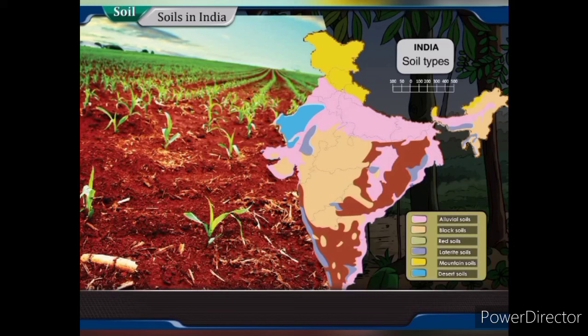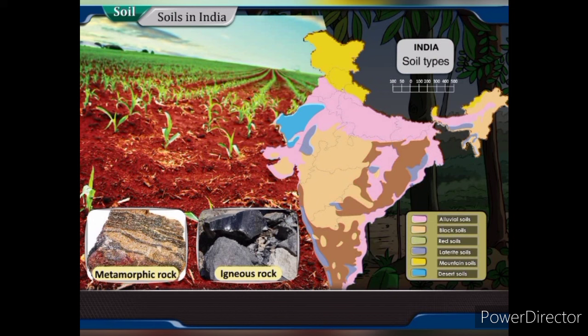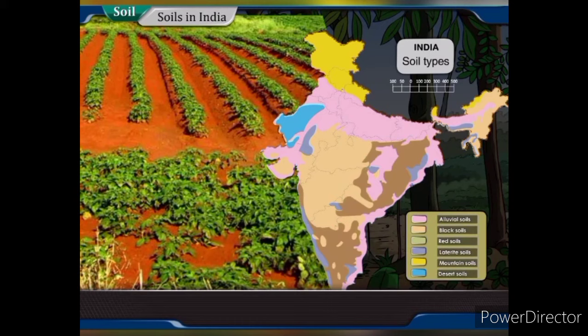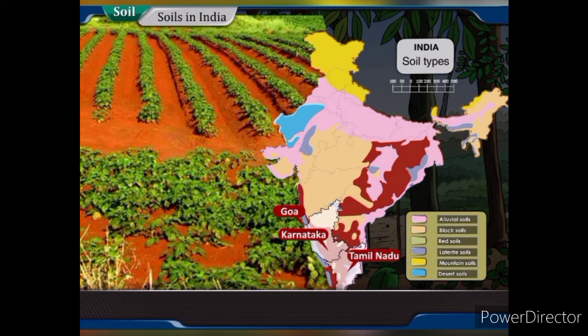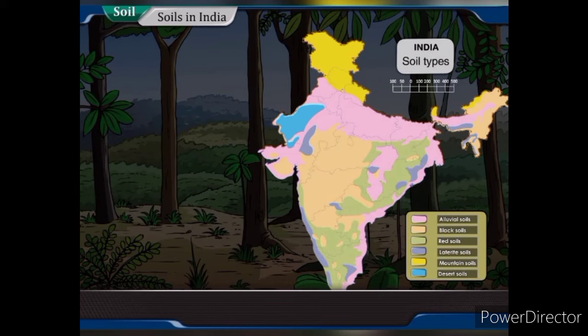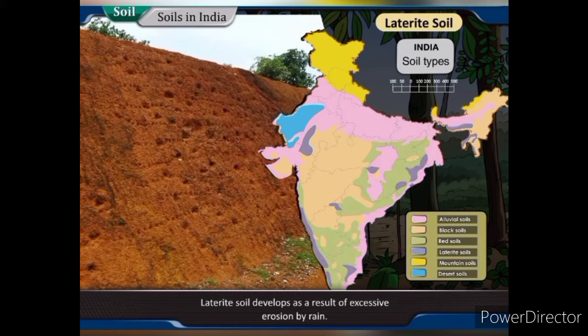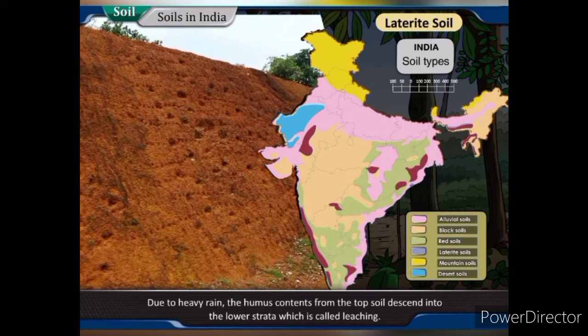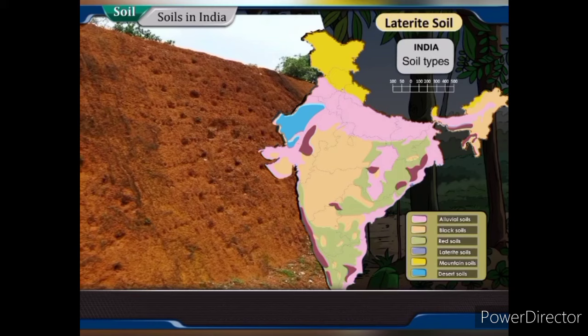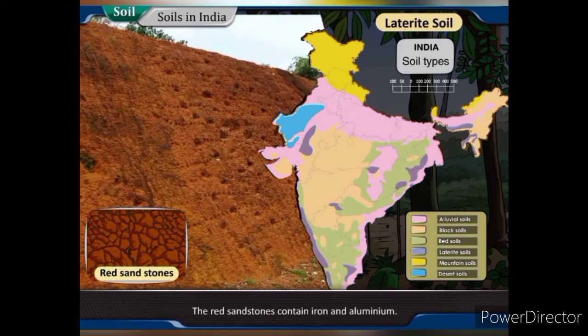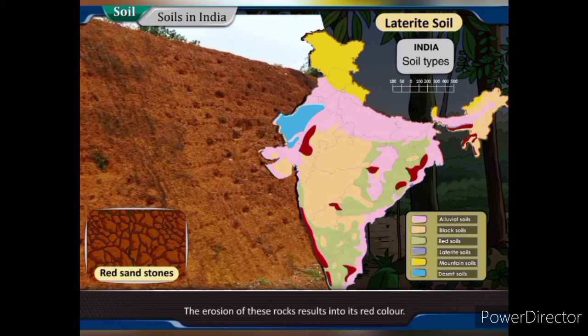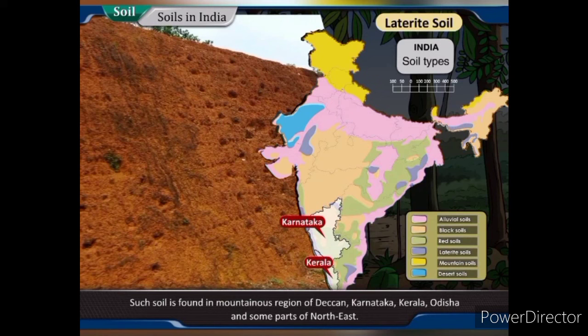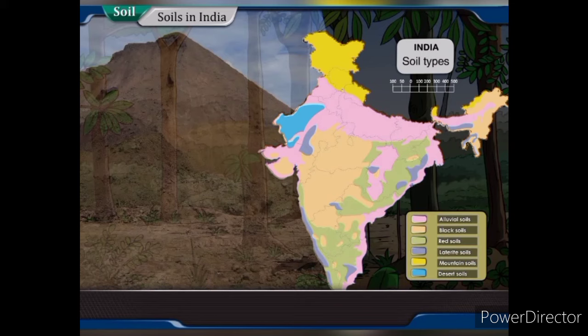Red soil is found in regions of igneous and metamorphic rocks. Its red color is due to its ferrous and other humus contents. The soil is porous and fertile and is seen in Goa, Tamil Nadu, Karnataka, Andhra Pradesh, Odisha and Jharkhand. Laterite soil develops as a result of excessive erosion by rain. Due to heavy rain, the humus contents from the top soil descend into the lower strata, which is called leaching. As the soil contains less humus, it is less fertile. Red sandstones contain iron and aluminium, and their erosion results in the soil's red color. Such soil is found in the mountainous regions of Karnataka, Kerala, Odisha and some parts of the northeast.